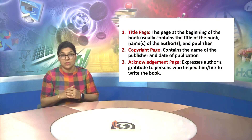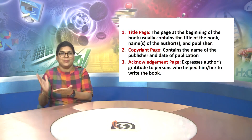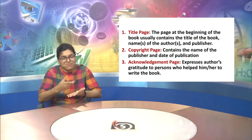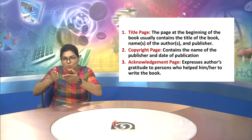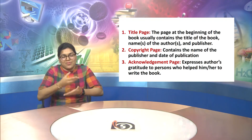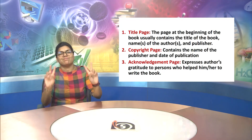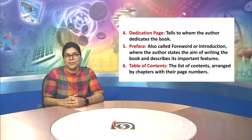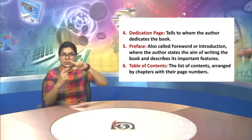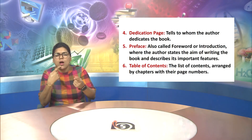Point 3 is the acknowledgement page. The acknowledgement page expresses the author's gratitude to persons who helped him or her to write the book. Point 4 is the dedication page, which tells to whom the author dedicates the book.